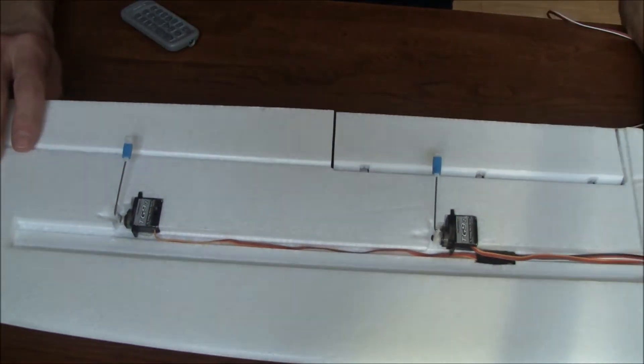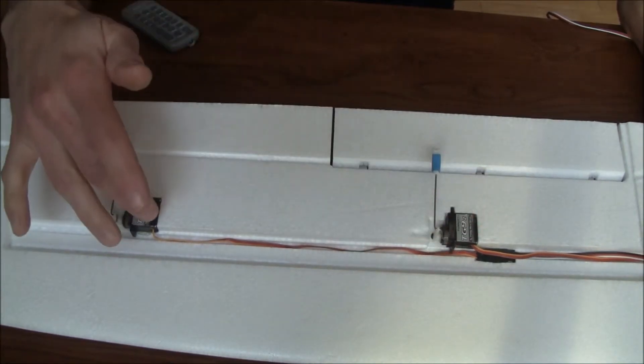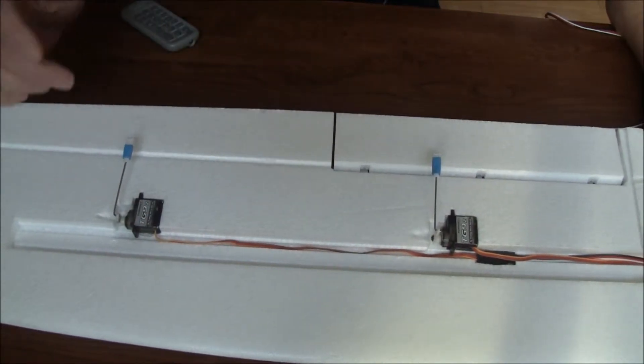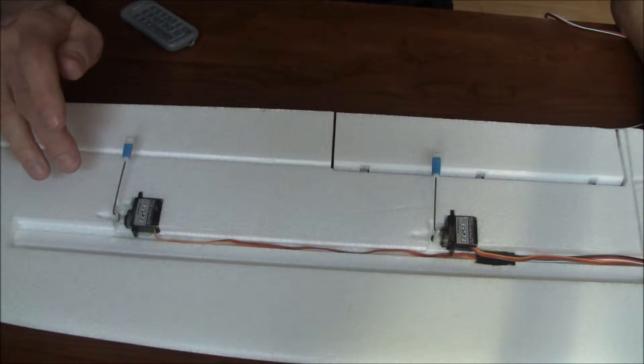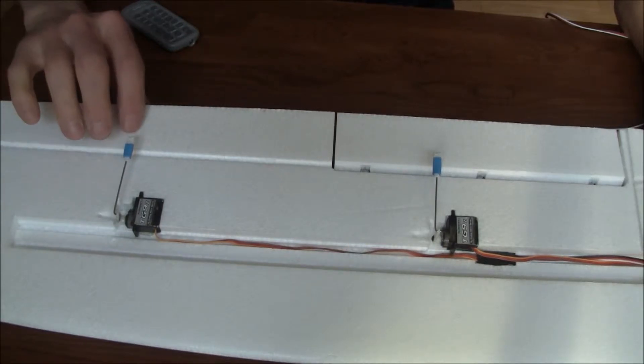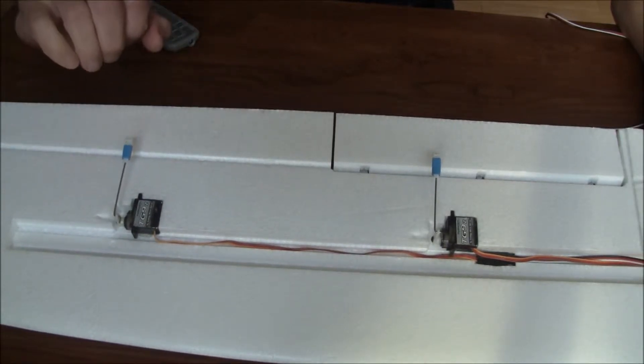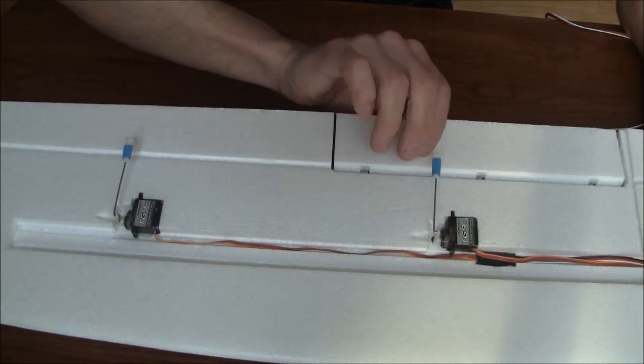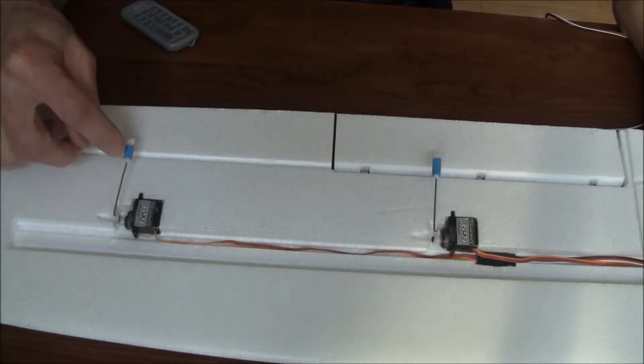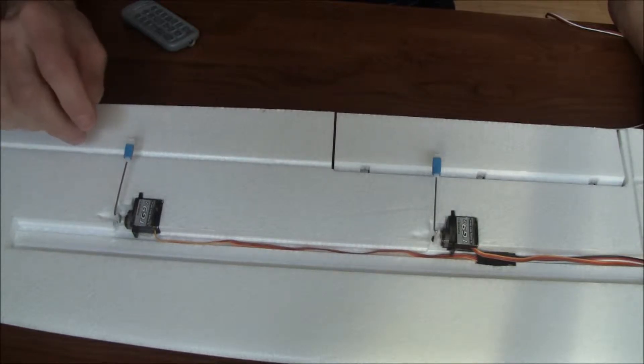I started working on the wings. I've got the servos installed in the wings. Those are glued in using the glue that was provided in the kit. I've added the control horns, those are glued in, and I've also added the linkages. You'll notice the piece of tubing that's on there is actually a piece of heat shrink.